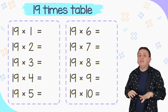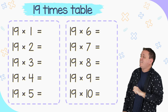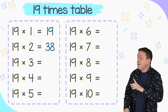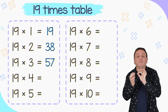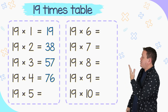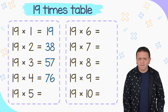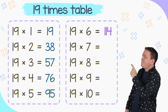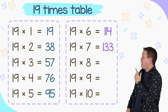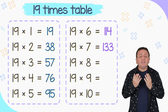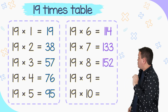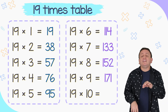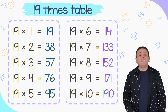Our next multiplication table is not that easy, so pay attention: the 19 times table. 19 times 1 equals 19. 19 times 2 equals 38. 19 times 3 equals 57. 19 times 4 equals 76. What about 19 times 5? 19 times 5 equals 95. 19 times 6 equals 114. 19 times 7 equals 133. 19 times 8 equals 152. 19 times 9 equals 171. One more: 19 times 10 equals 190.